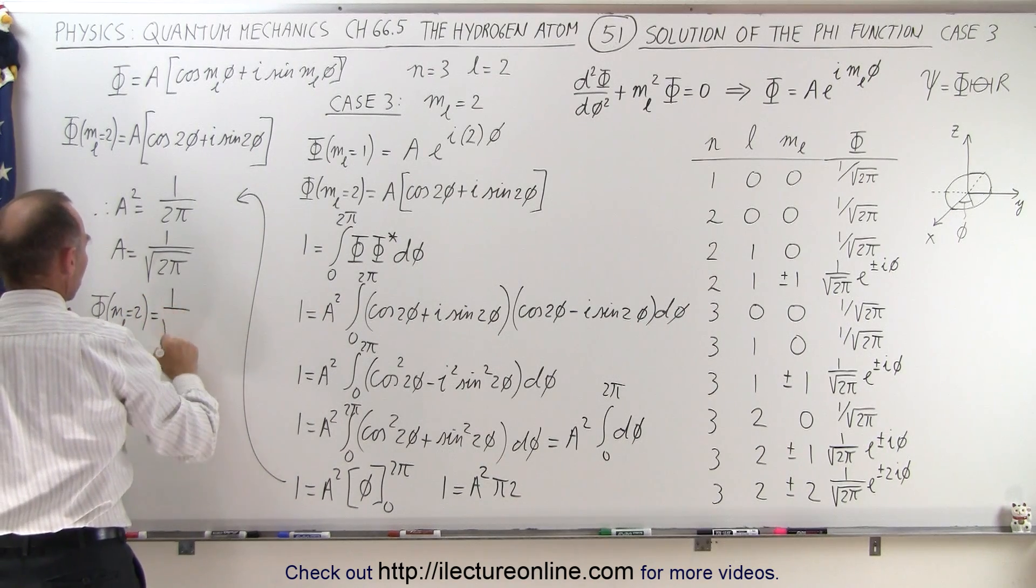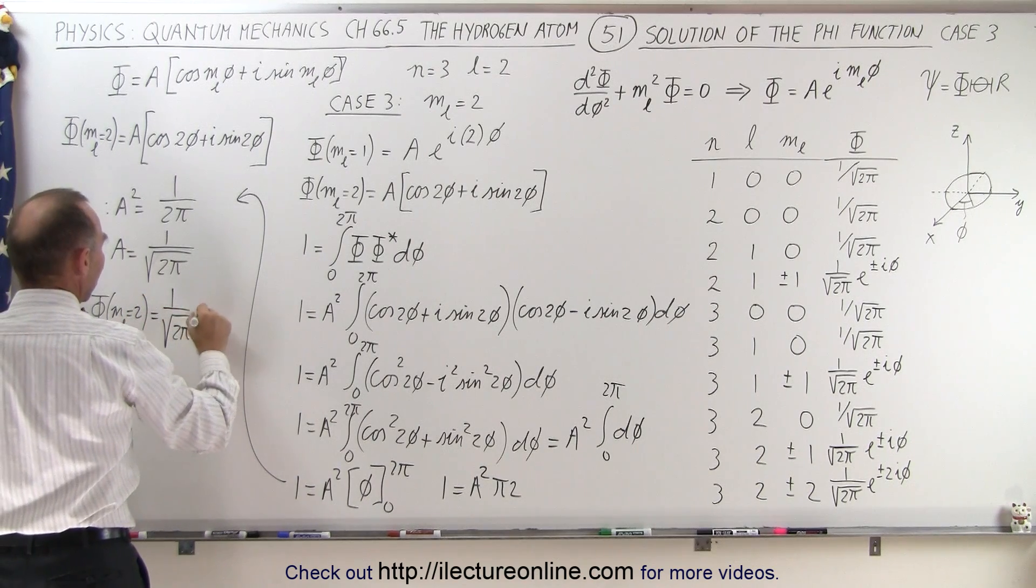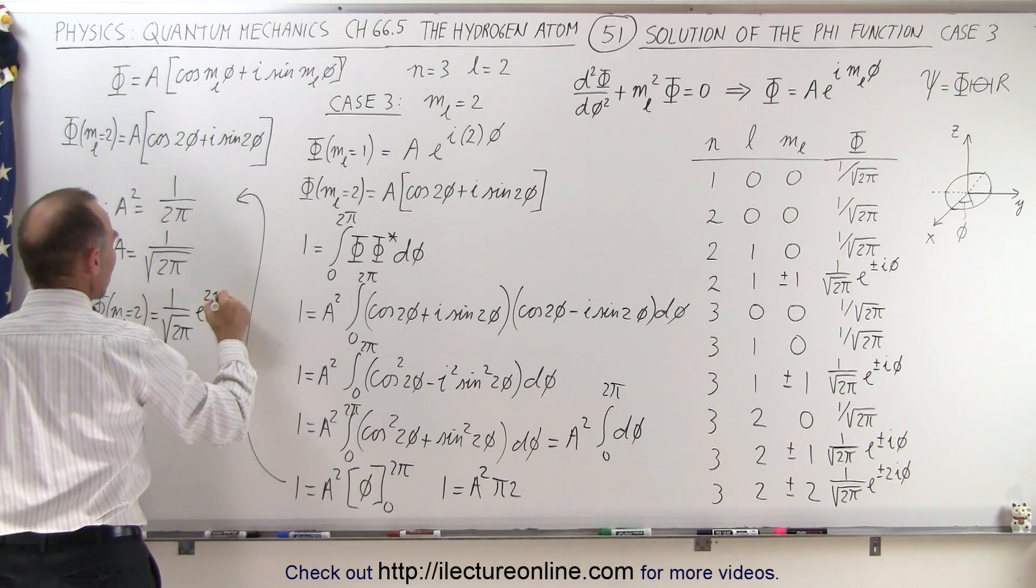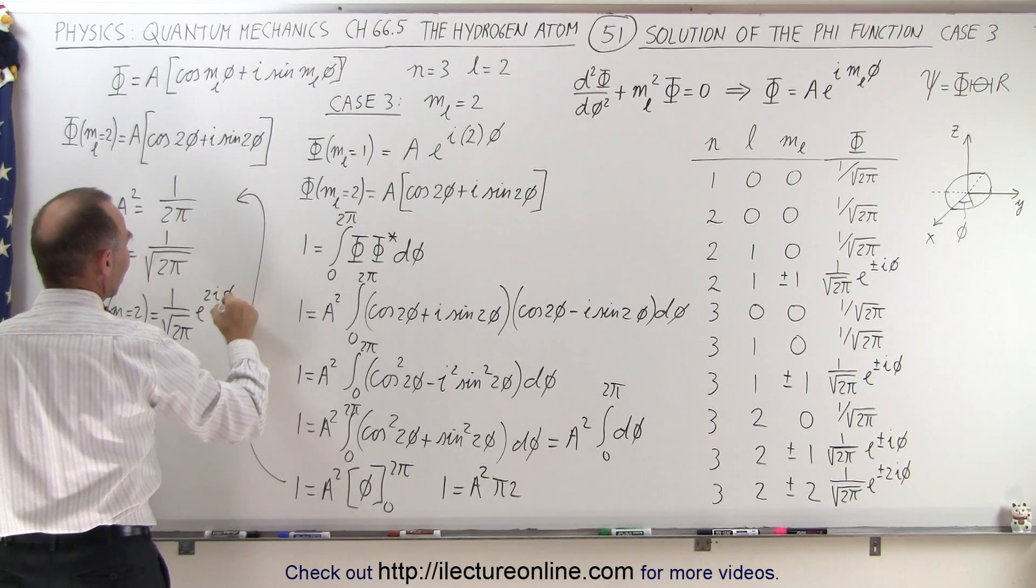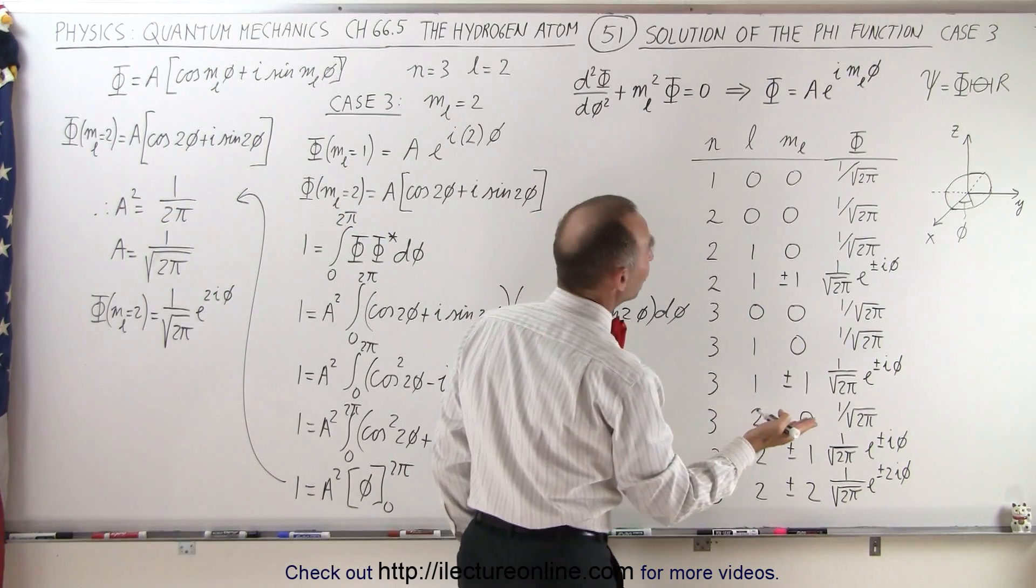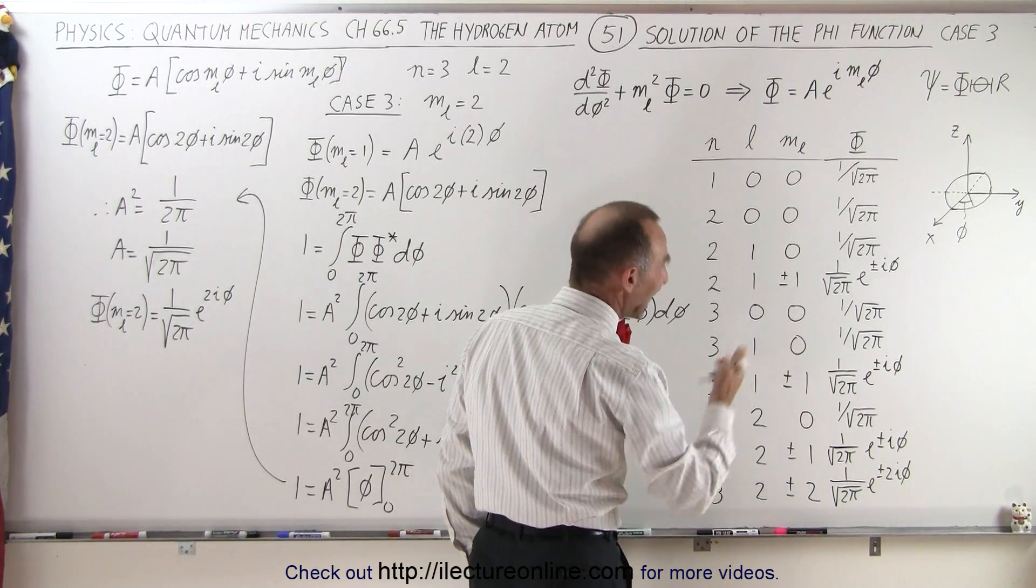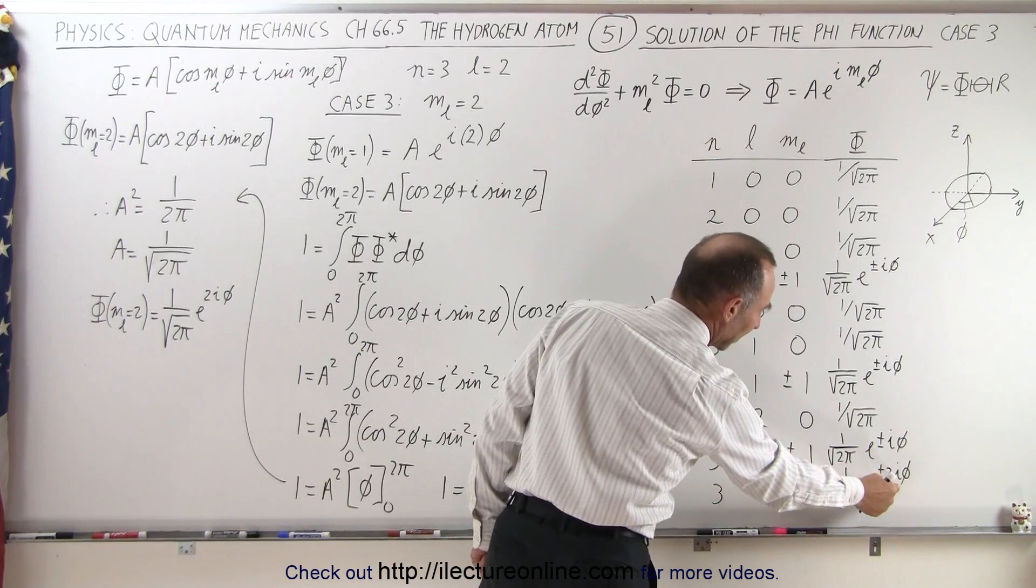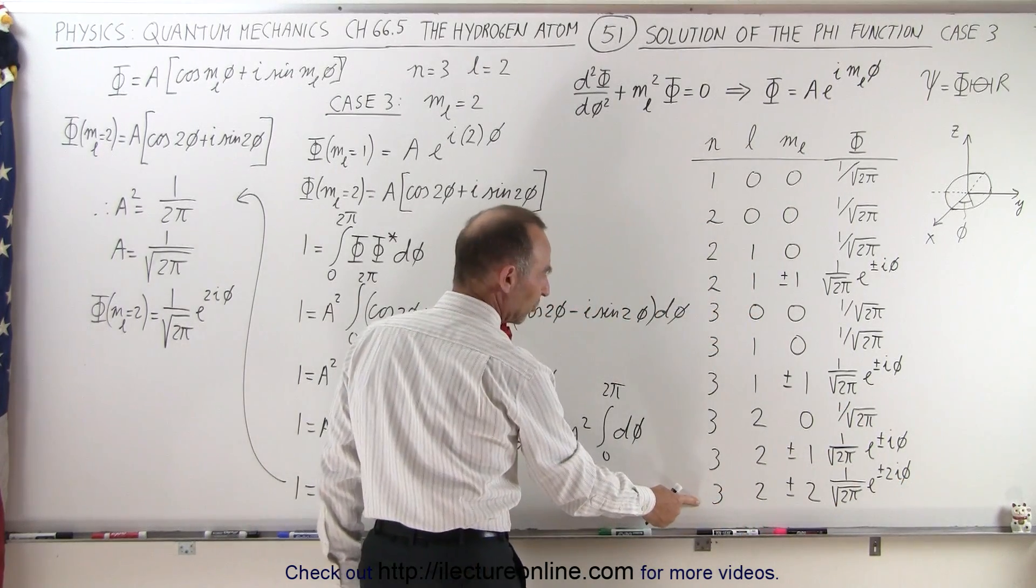So we have m sub l is equal to 2. That's going to be 1 over the square root of 2π times e to the 2i times φ. And it's going to be plus or minus, in case if you look for m sub l equals to negative 2, then you end up with a negative value here. But so we solve this case right here.